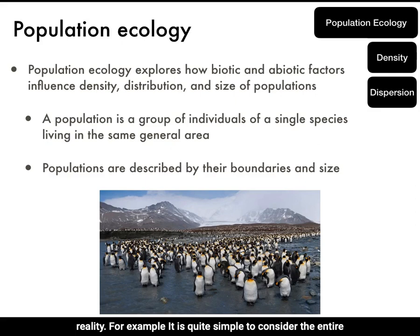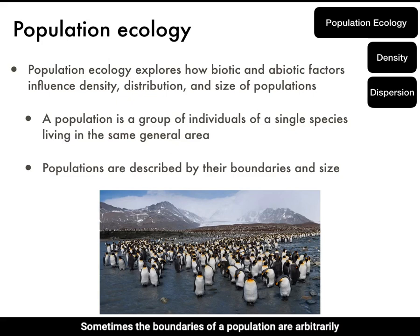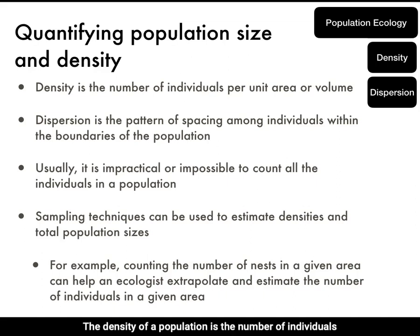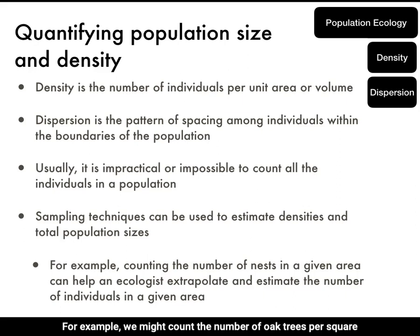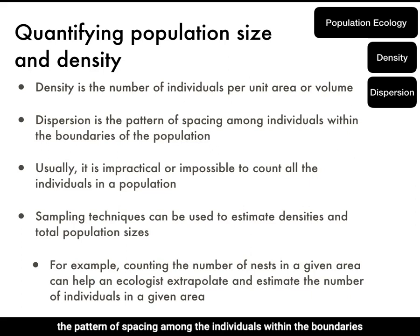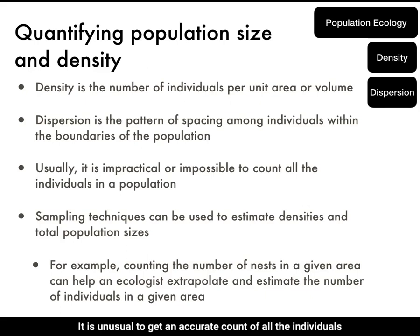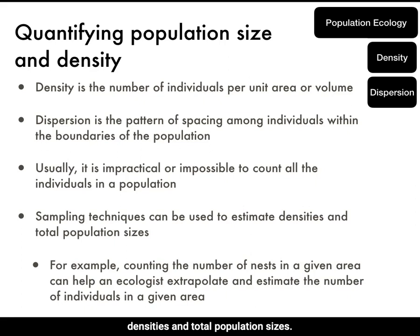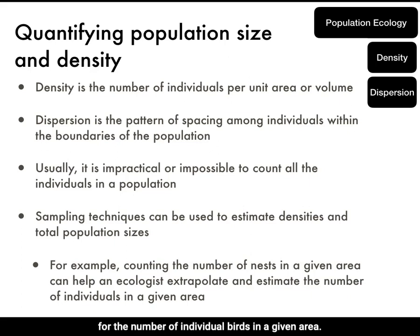For example, it is quite simple to consider the entire population of a particular terrestrial bird species on a small island. Sometimes the boundaries of a population are arbitrarily drawn, like a study of oak trees in a county in Georgia. The density of a population is the number of individuals per unit area or volume — for example, the number of oak trees per square kilometer or E. coli bacteria per milliliter. Dispersion is the pattern of spacing among individuals within the boundaries of the population. Researchers often use sampling techniques to estimate densities and total population sizes.